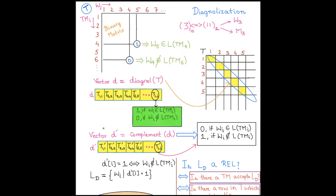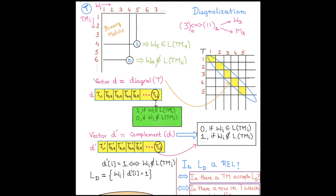Now we consider the complement vector D'. I take each element of vector D and complement it: first element complemented, second complemented, third complemented, and so on. If a cell value is 0, its complement is 1 — meaning that string will be accepted by the Turing machine. If the cell value is 1, its complement is 0 — meaning the string will not be accepted. So from vector D to D': if the cell value is 0 the string is accepted; if it is 1 the string is not accepted.